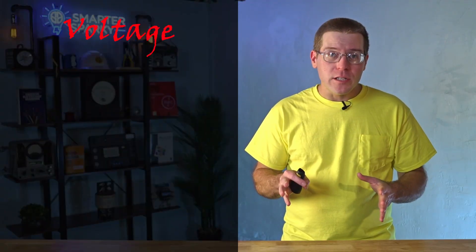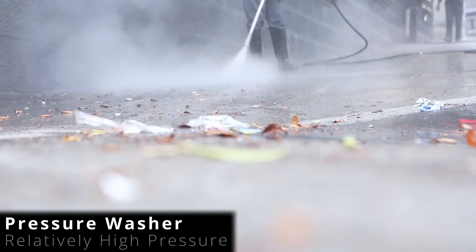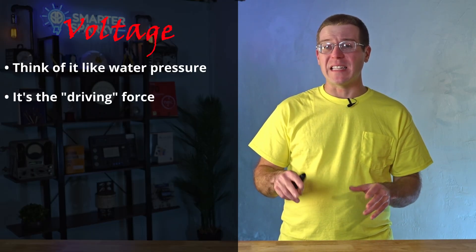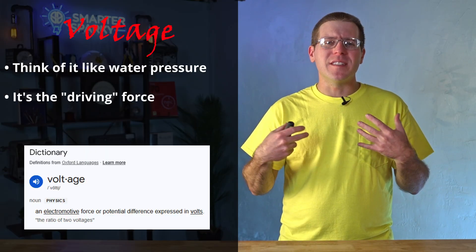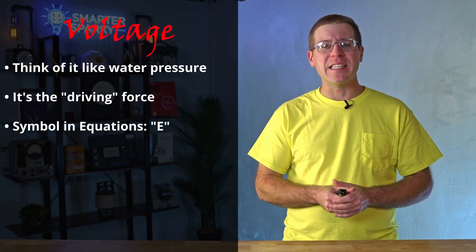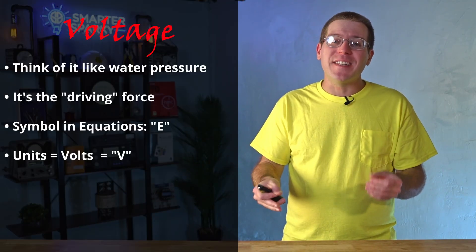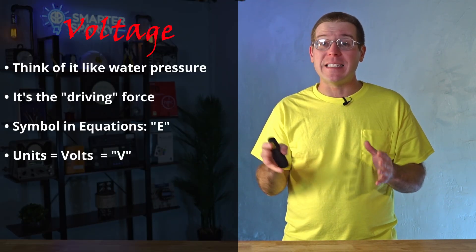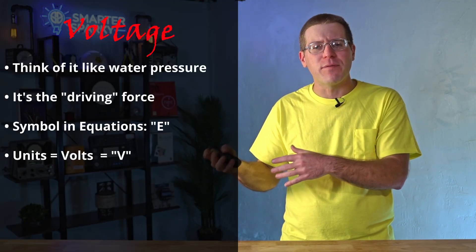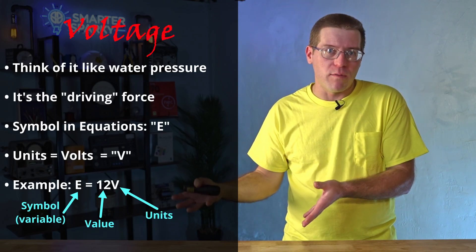Let's take a look at the lineup. Voltage is kind of like pressure — think of low pressure like low voltage and high pressure like high voltage. It's how much force, or more technically electromotive force, is available. Voltage is symbolized by the letter E. We use the letter V as our units — volts — so that leaves us needing a different letter to symbolize the unknown value. Therefore, we use the letter E from electromotive force. For example, E equals 12 volts.